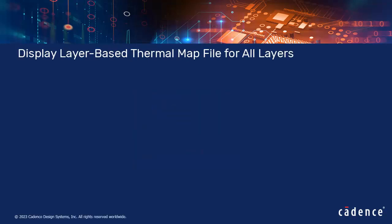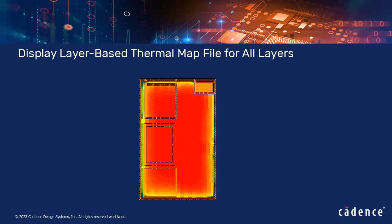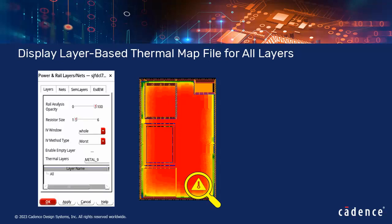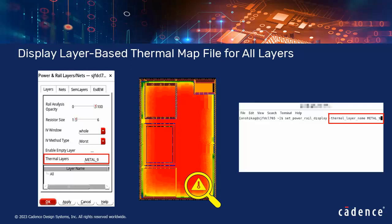Users can now view the temperature distribution of all layers in the temperature map for comprehensive thermal analysis. In the layers tab of the power and rail layers nets form, a thermal layers field has been added, and the thermal layer name parameter has been added to the set power rail display command.